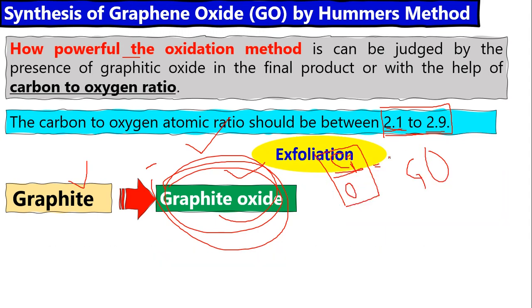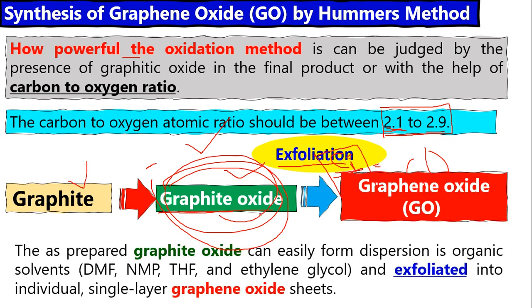The third process is called exfoliation. Exfoliation means when we have a material and remove the dead layer. We get graphite oxide in bulk form, so we need thin layers. We use sonication and other processes through exfoliation.